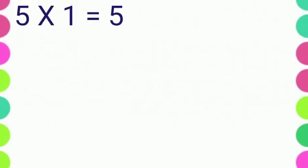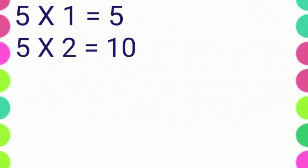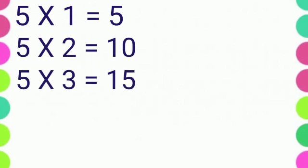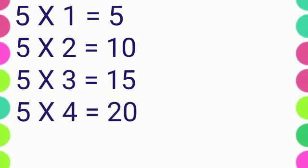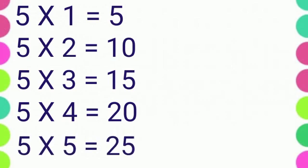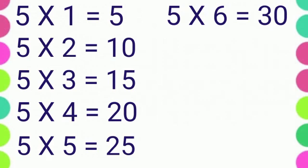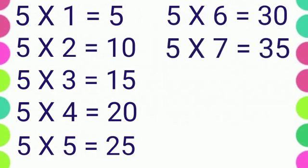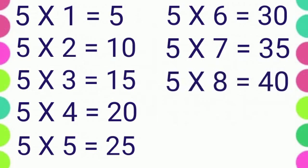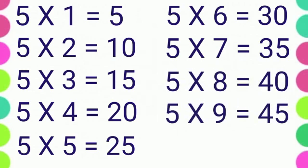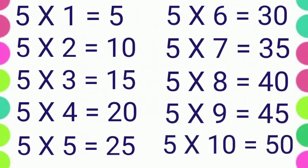5 1's are 5, 5 2's are 10, 5 3's are 15, 5 4's are 20, 5 5's are 25, 5 6's are 30, 5 7's are 35, 5 8's are 40, 5 9's are 45, 5 10's are 50.